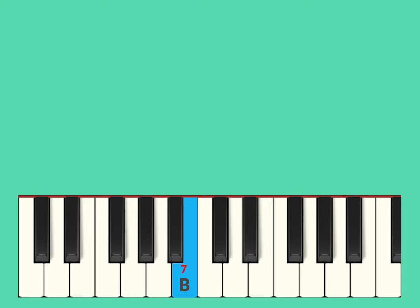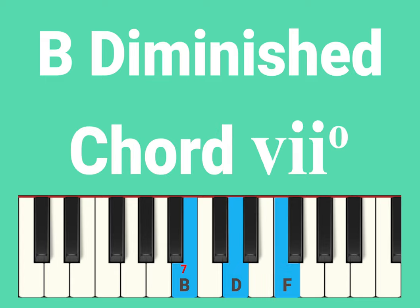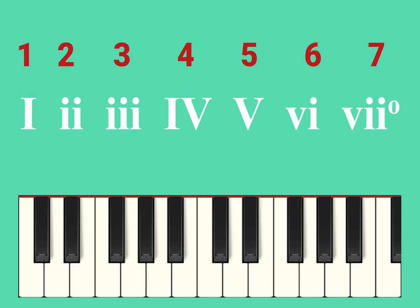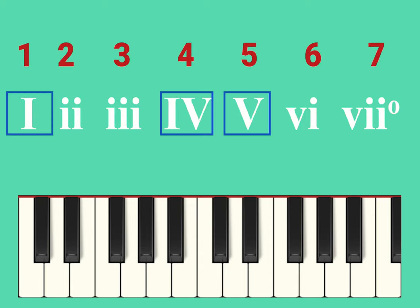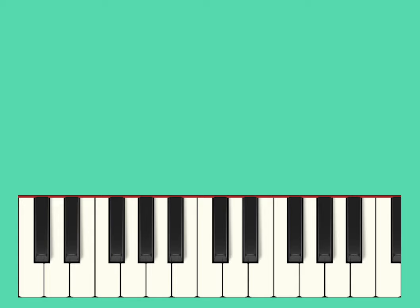The seventh and final note in our scale before arriving back at C is the note B. If we form a chord starting on B using just the white notes, we get something a little different — a diminished chord. This is the odd one out; it's neither major nor minor. Diminished chords don't appear very frequently in music, so don't worry too much about this one for now. Looking at all the chords in a major scale, we can easily see which are major (uppercase), which are minor (lowercase), and diminished (shown by the small circle).